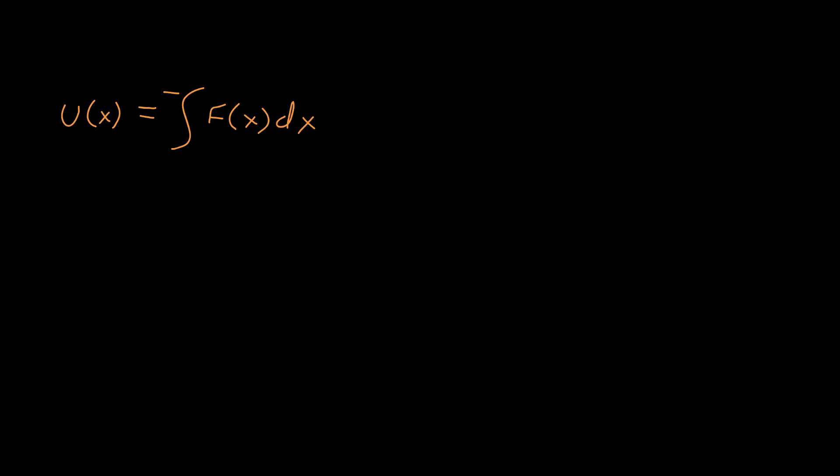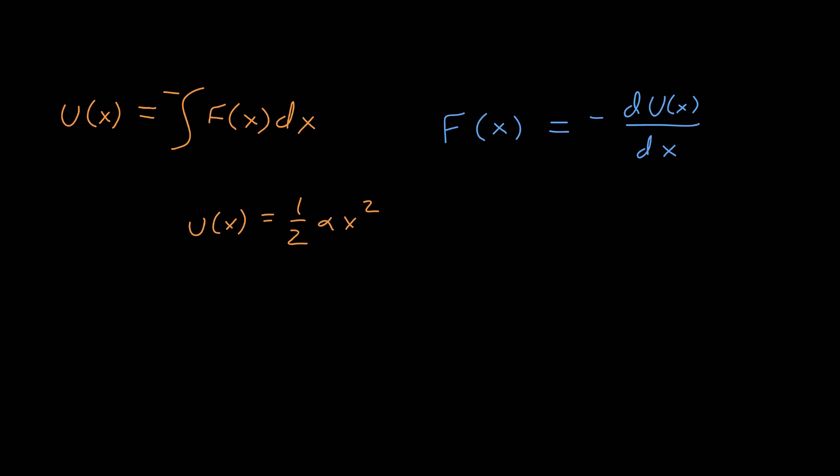Finally, we have the very important inverse relationship. If the potential energy function is the negative antiderivative of the force, then the force is the negative derivative of the potential energy function. In this direction, we don't have to worry about the additive constant — we can just take the derivative. For example, if the potential energy is one-half alpha x squared, we take the derivative and get force equal to negative alpha x. It is worth knowing that the potential energy function is a scalar and the force is a vector, but within the one-dimensional vector notation these relationships hold.